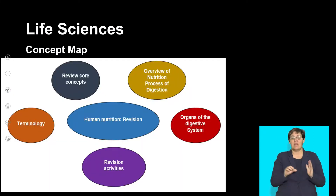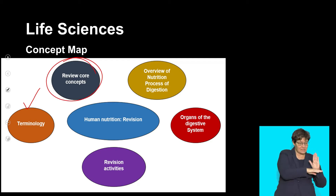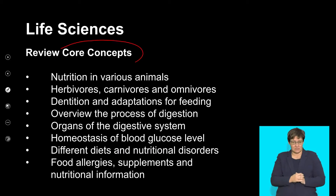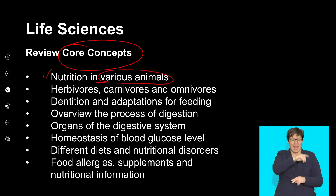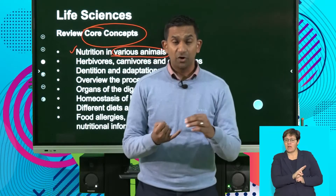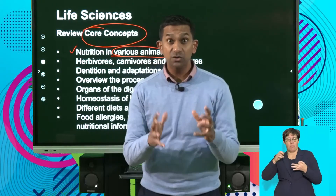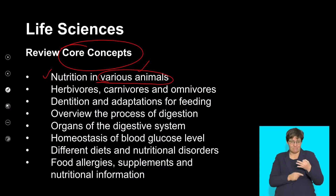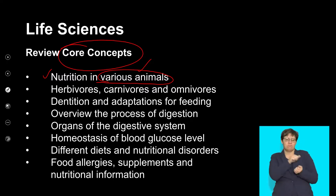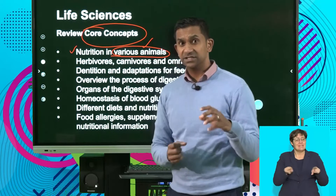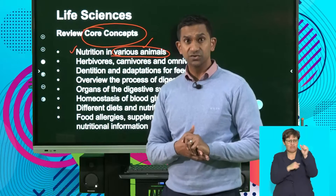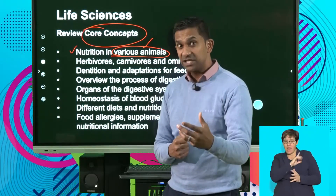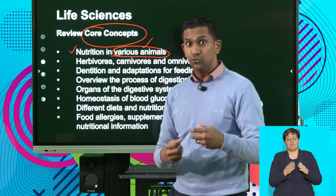It's important that terms are reviewed and then we have an overview of the core concepts in nutrition. It's important that we reflect on nutrition in various different animals — we spent some time looking at the diet of omnivores, carnivores, and herbivores. We also looked at how their teeth structure was adapted for their modes of nutrition. Different animals have a different arrangement of teeth; size and structure also vary, which is an adaptation to supply energy based on the food they eat.